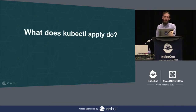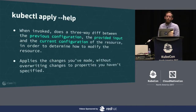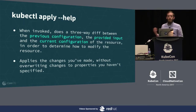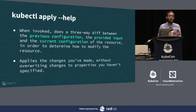So what does kubectl apply actually do? This is paraphrased from some documentation - it's not the help text for the command. When invoked, it does a three-way diff between the previous configuration that you had, the input that you're providing, and the current configuration of the object itself. It uses those three states to determine how to modify the resource, then applies those changes and doesn't overwrite other changes to properties that you haven't specified.